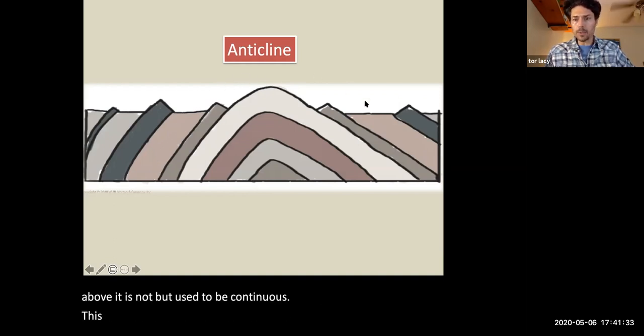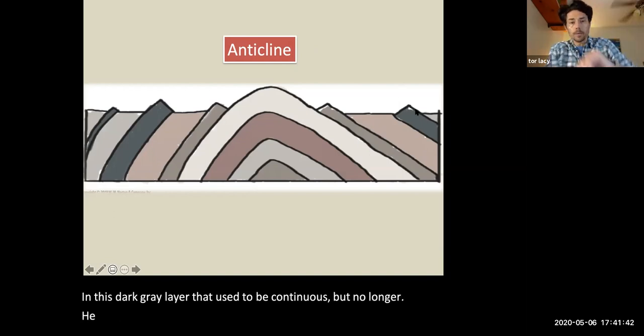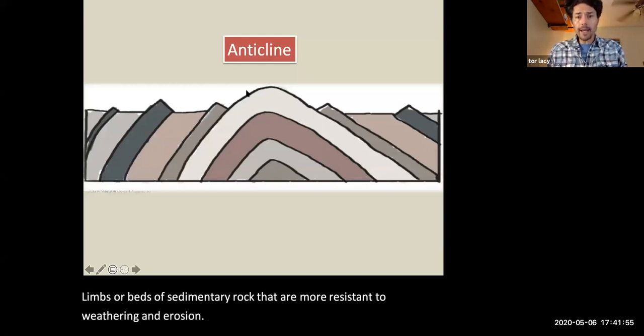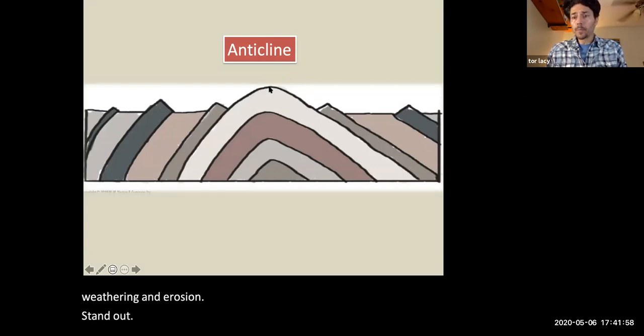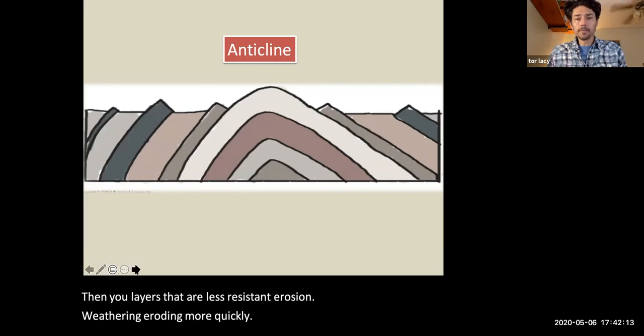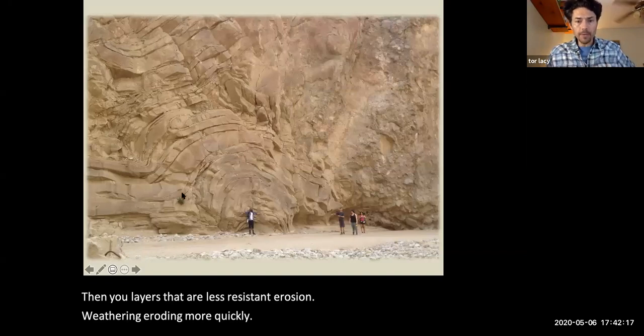This light brown layer, same story. And this dark gray layer, that used to be continuous, but no longer is because of erosion. The limbs or beds of sedimentary rock that are more resistant to weathering and erosion stand out more prominently in topographic relief than do layers that are less resistant to erosion that are weathering and eroding more quickly. And here we have another example of an anticline.